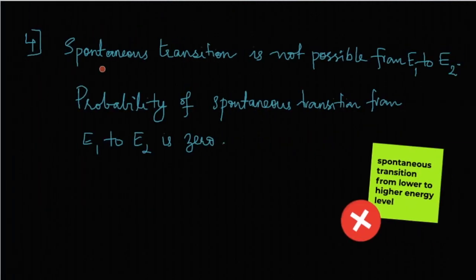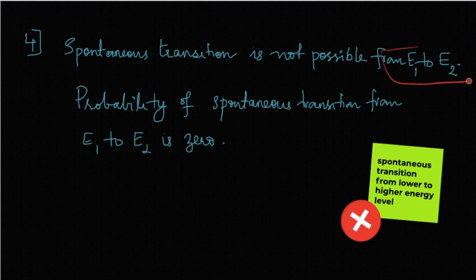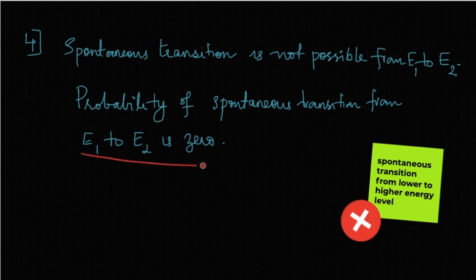It follows that a spontaneous transition is not possible from the lower energy level E1 to the upper energy level E2. So the probability of spontaneous transition from E1 to E2 is always zero.